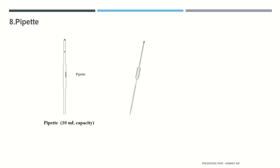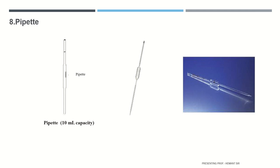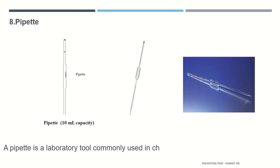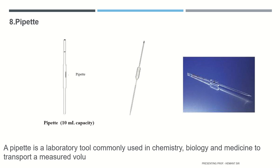The capacity of the pipette is 10 ml. A pipette is a laboratory tool commonly used in chemistry, biology, and medicine to transport a measured volume of liquid, often as a media dispenser.